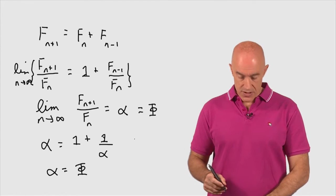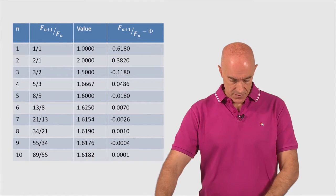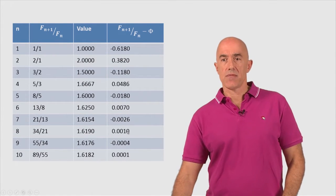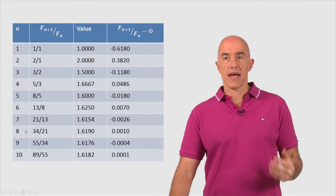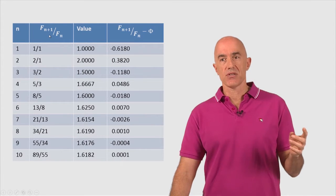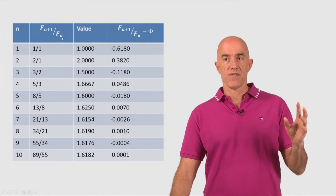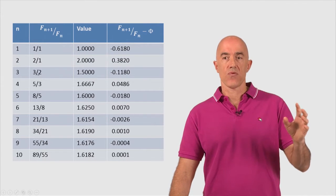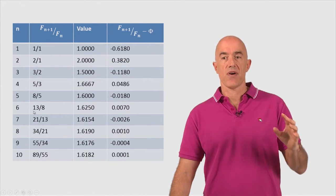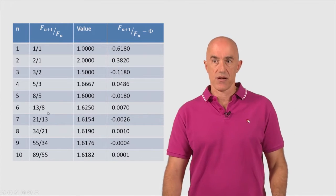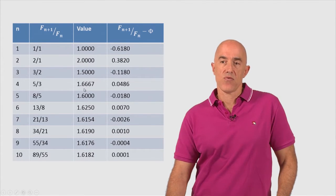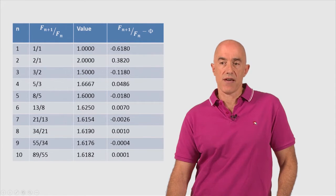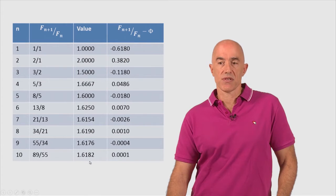So the limit of two consecutive Fibonacci numbers when the numbers go to infinity is equal to the golden ratio — that's the key relationship. We can look at some numerical values. Here I list n from 1 to 10 and look at F_{n+1} divided by F_n: 1/1, 2/1, 3/2, 5/3, 8/5, 13/8, etc. The numerical values are: 1, 2, 1.5, 1.66, 1.6, 1.625, 1.6154, 1.619, 1.617, 1.618.